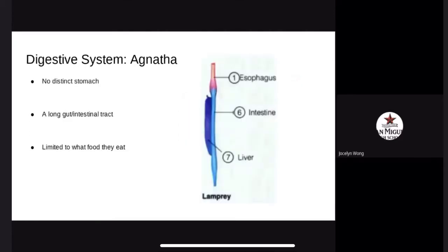The digestive system. Agnathans are ectothermic, which means they do not regulate their own body temperature. Agnathan metabolism is slow in cold water, and therefore they do not eat very much. Agnatha have no distinct stomach, but rather a long gut. Agnathans are limited to what they eat because they do not have jaws — they suck bodily fluids with their sucker-like mouth for easy attachment to prey.